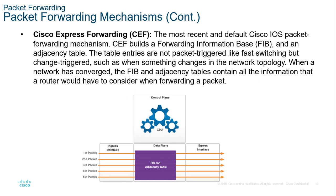All of that was changed with Cisco Express Forwarding — CEF. This is the most recent and currently the default IOS packet forwarding mechanism for Cisco devices. CEF builds a Forwarding Information Base (FIB) and an adjacency table. Table entries are not packet-triggered like fast switching, but change-triggered — when something changes in the network topology, the information is updated. When a network has converged, the FIB and adjacency tables contain all the information the router needs to make forwarding decisions.